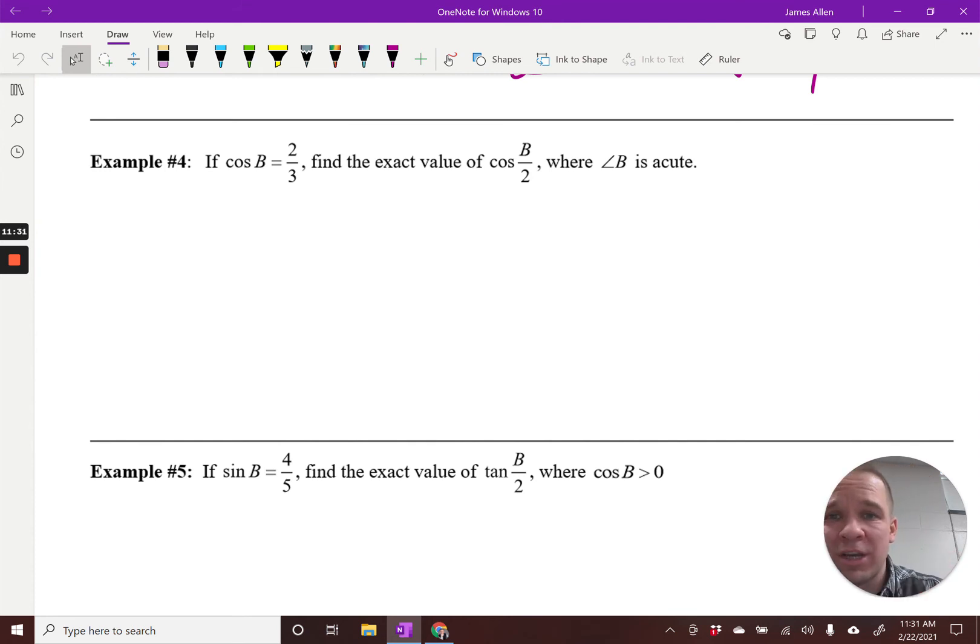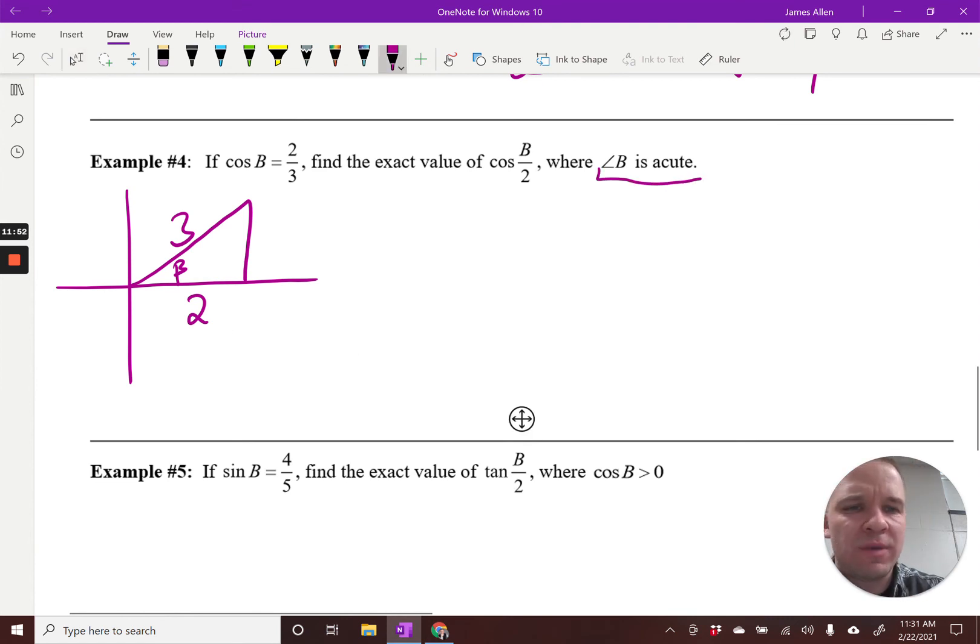So first off, I'm going to draw a triangle much like we've done with these problems in the past. So I'd have 2, 3, right? There we go. Awesome. Wonderful. Cool. One thing that I just kind of brushed over is, wait, why did I draw it in the first quadrant, right? Well, it says b is acute, meaning b is between 0 and 90 degrees. So that lands it in quadrant 1. Okay? That's how we came to that conclusion there. Lovely. Fantastic. Wonderful.